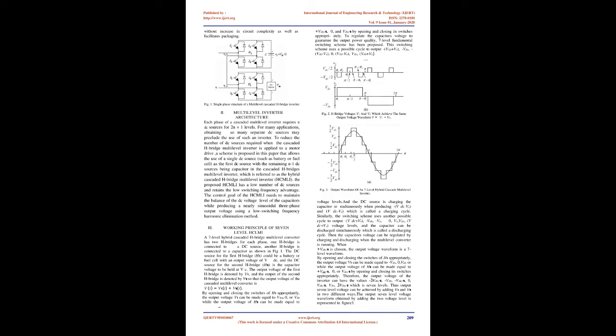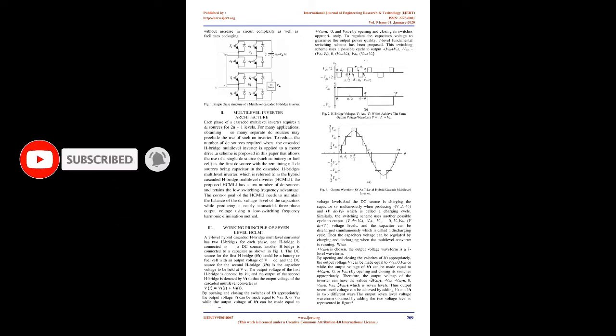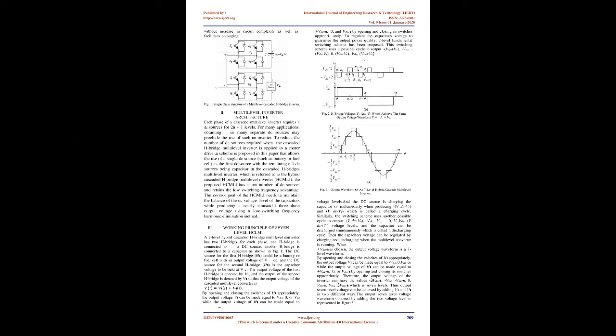The multilevel voltage source inverter is recently applied in many industrial applications such as AC power supplies, static VAR compensators, drive systems, etc. One of the significant advantages of multilevel configuration is the harmonic reduction in the output waveform without increasing switching frequency or decreasing the inverter power output. The output voltage waveform of a multilevel inverter is composed of a number of voltage levels, typically obtained from capacitor voltage sources. The so-called multilevel starts from three levels; as the number of levels reaches infinity, the output THD approaches zero.